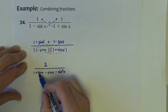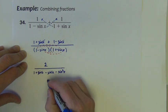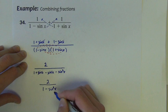Negative sine times sine is negative sine squared. And what can we do here? Sine minus sine goes away. So we have 2 divided by 1 minus sine squared.